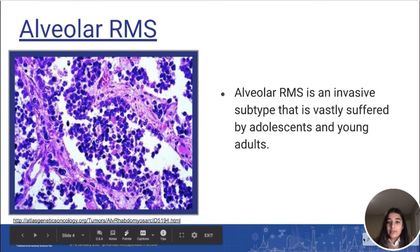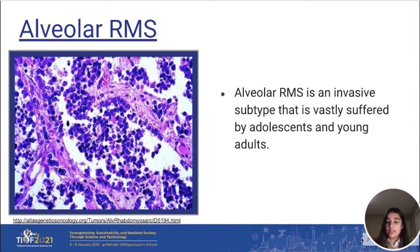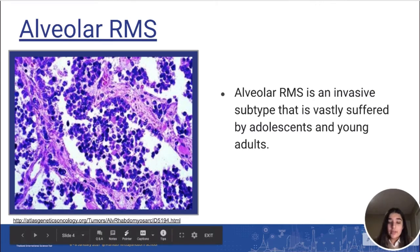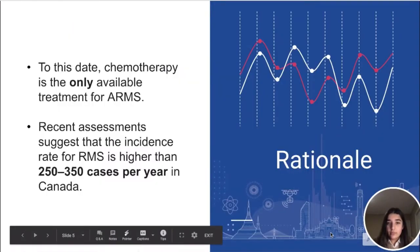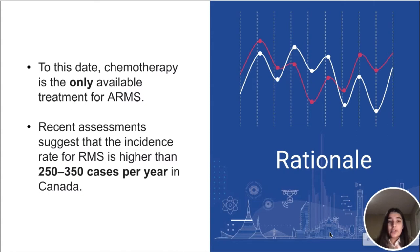So what is alveolar RMS? Alveolar RMS is an invasive subtype, and it is vastly suffered by adolescents and young adults. It is named alveolar due to the fact that it resembles the alveoli of the lungs, which can be seen through this image right here. We study this and invest our time and resources into it because to this day, chemotherapy is the only viable treatment option for RMS, and recent studies suggest that the incidence rate of RMS is higher than 250 to 350 cases per year in Canada itself.